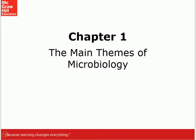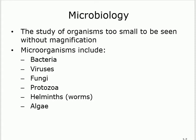Chapter one is more of an introduction and history covering the main themes of microbiology. Microorganisms are organisms too small to see with your eyes — you have to use some sort of magnification. The six microorganisms you need to remember are: bacteria, virus, fungus, protozoa, helminths (also known as worms), and algae. Anything not on this list is not a microorganism.